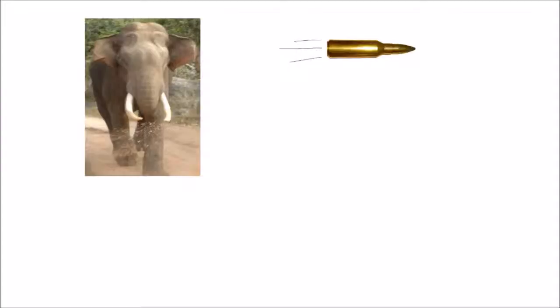So imagine an elephant running and a bullet flying through the air after being shot. You wouldn't want to get in the way of either of them. Both of them are very hard to stop, but for different reasons. The elephant is hard to stop because of its huge mass, and the bullet is hard to stop because of its huge velocity.